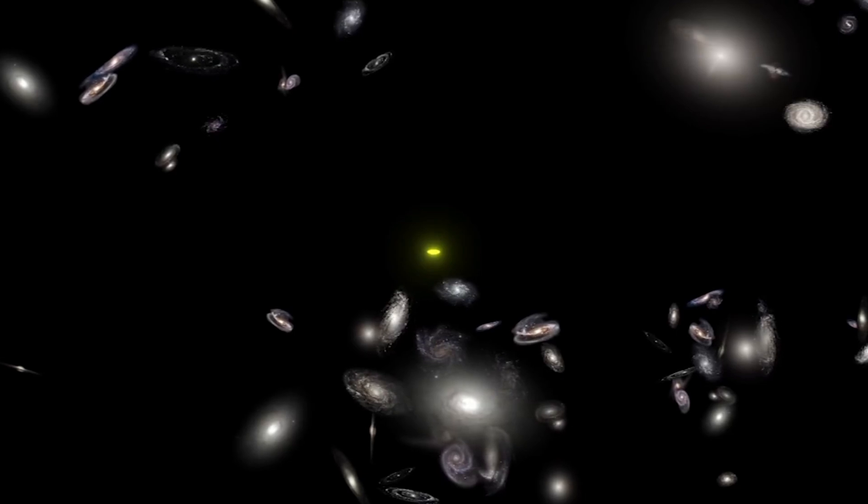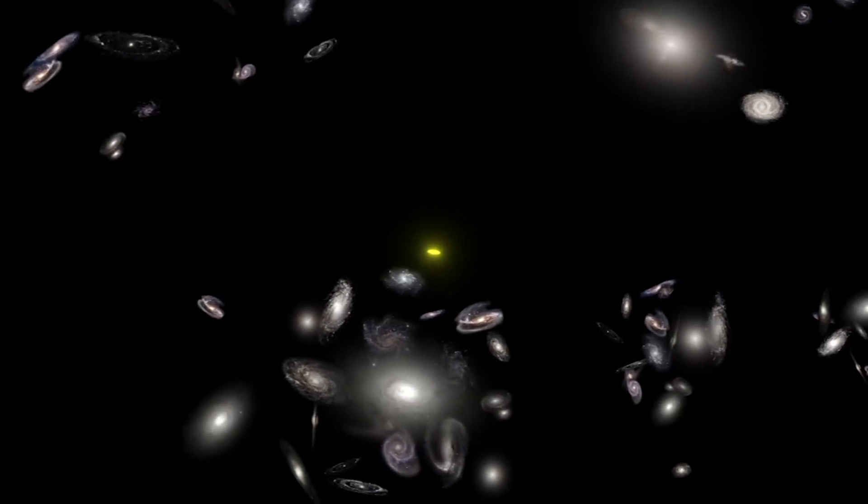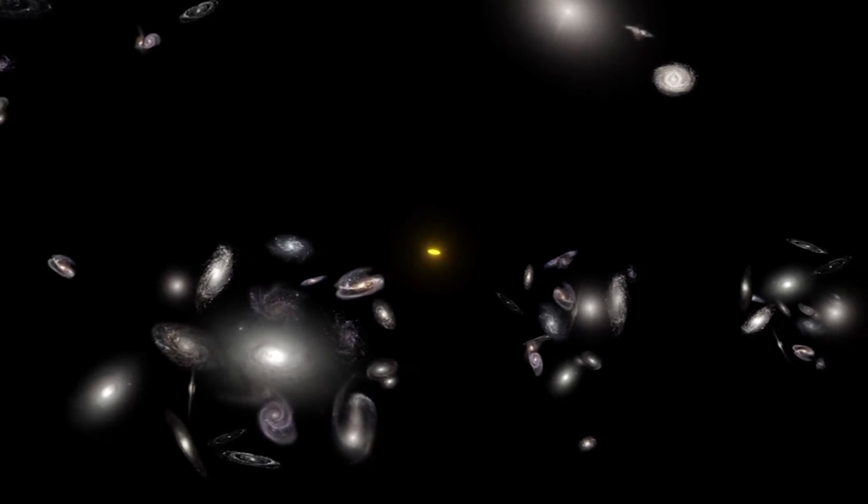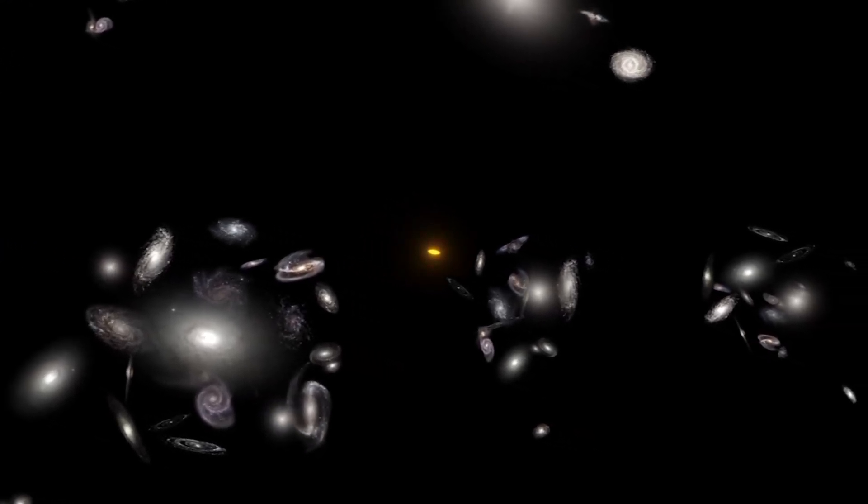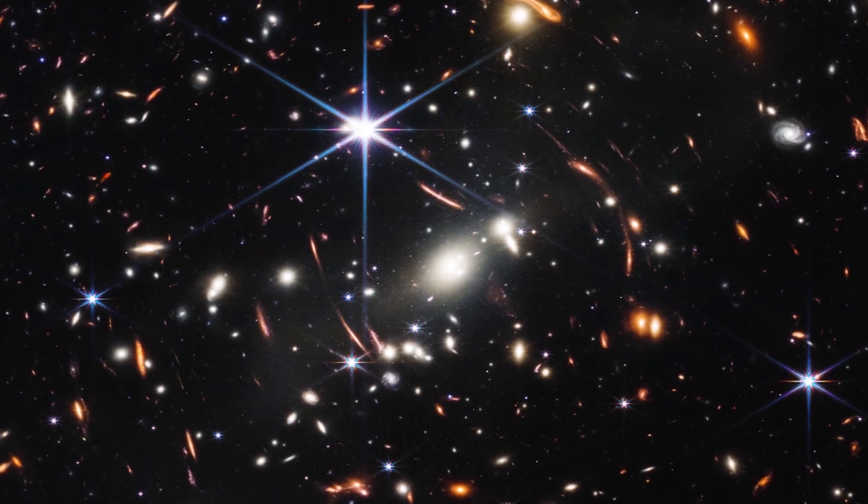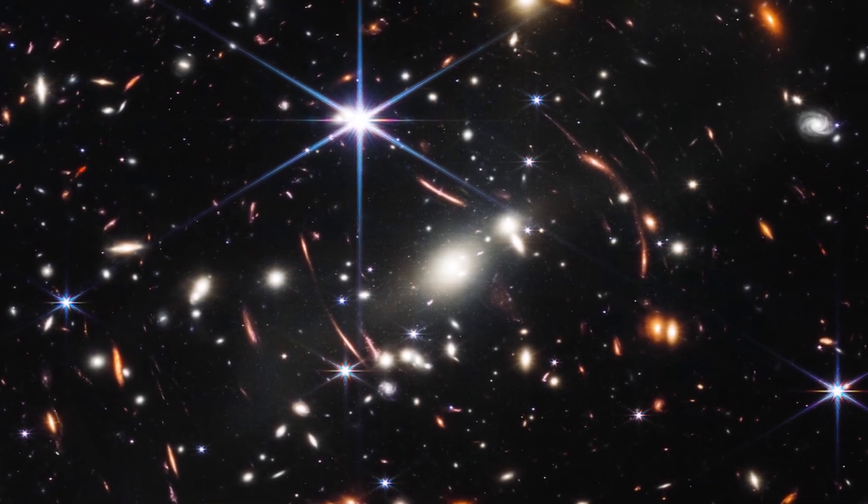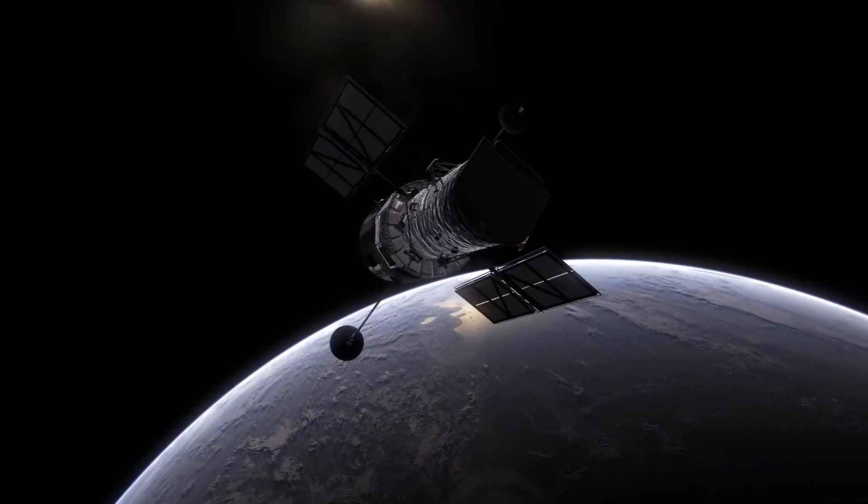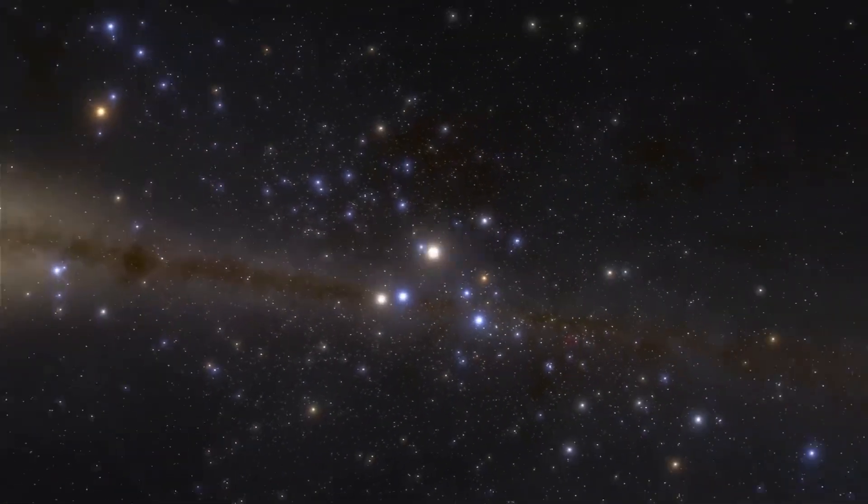The galaxies captured in these images appear to be too small, smooth, old, and numerous compared to the predictions of the Big Bang Hypothesis. The fact that the observed galaxies are two to three times smaller than similar galaxies imaged by the Hubble Space Telescope completely defies the expected behavior in an expanding universe.